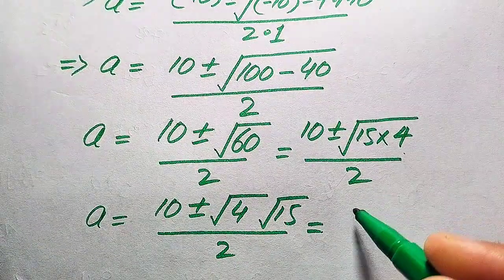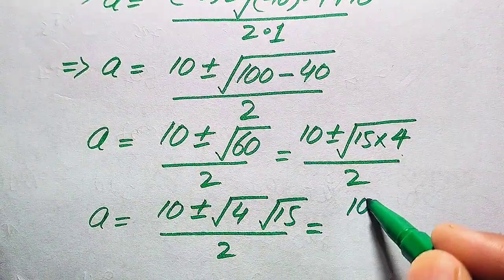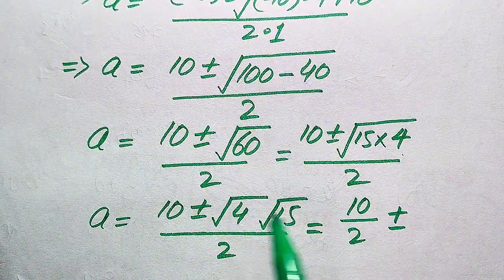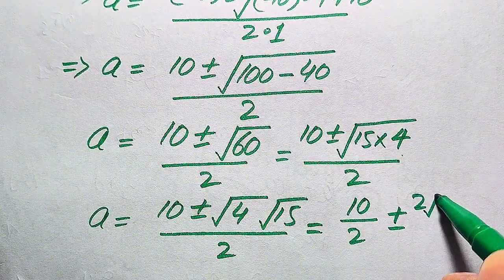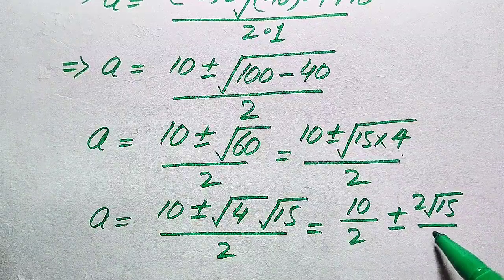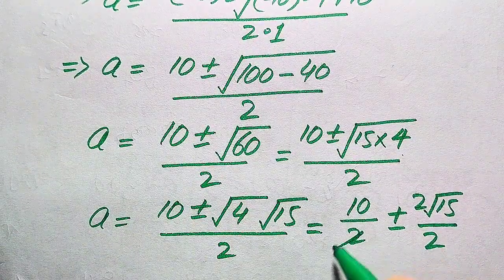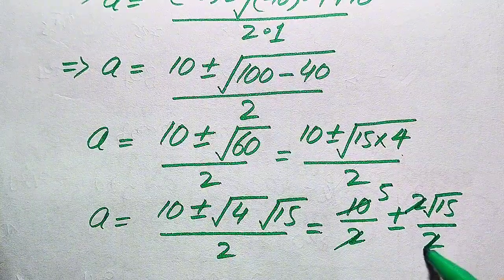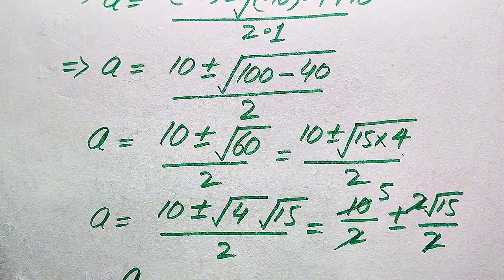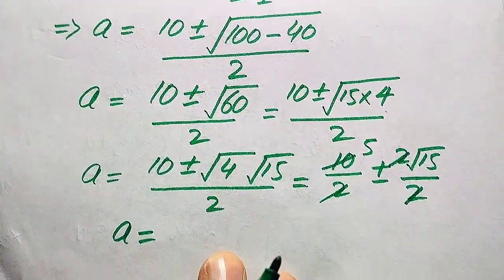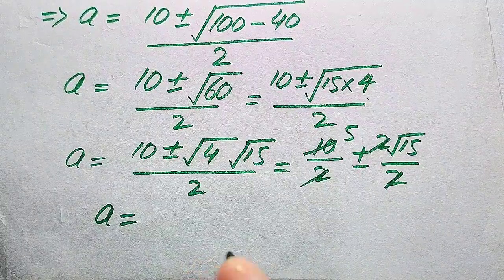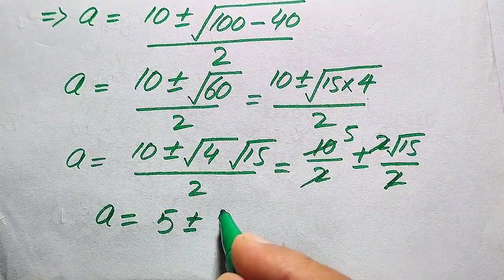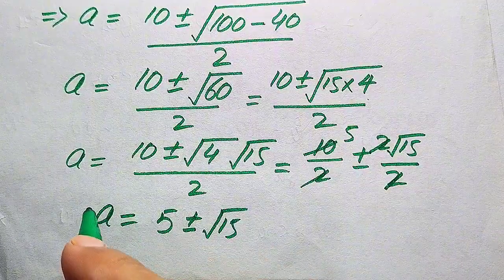We break this fraction: 10 divided by 2, plus or minus square root of 4 — which equals 2 — times square root of 15, divided by 2. So 10 divided by 2 is 5, and the two in the numerator and the 2 in the denominator cancel out. We get a equals 5 plus or minus square root of 15.